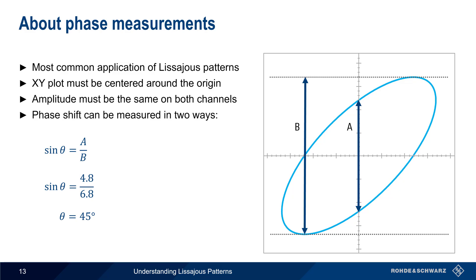Alternatively, this can also be done by using the ratio of the positive Y-intercept and the max value of the pattern, since this produces the same ratio, and thus produces the same arc sine value, or phase offset.